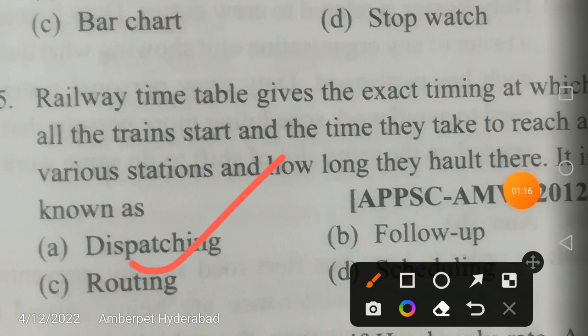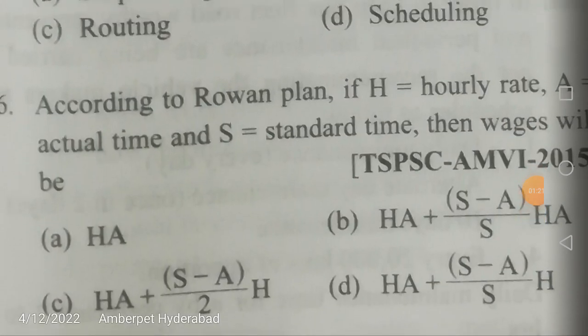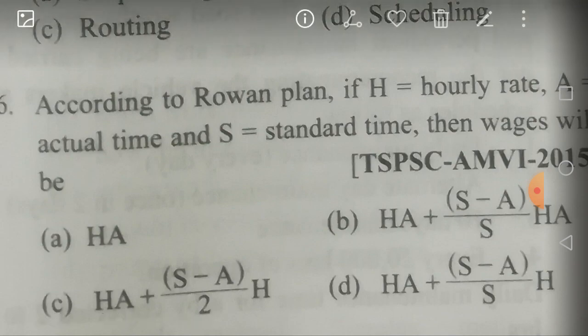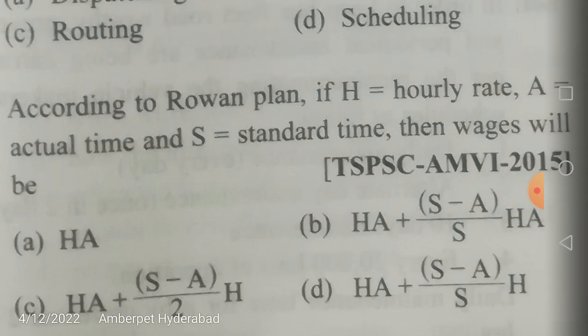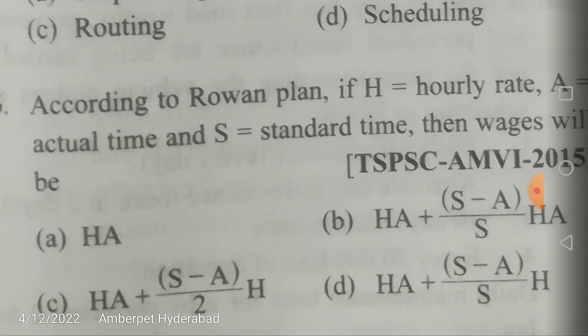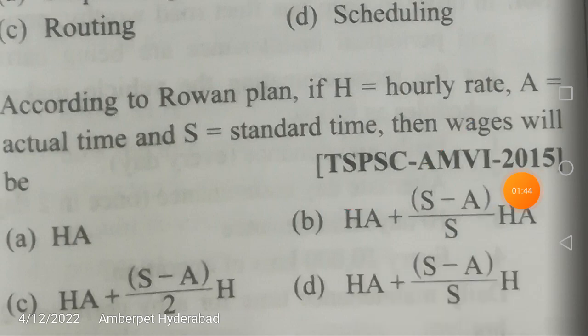This particular activity is known as routing. According to research, there are various wage incentive plans — Rowan plan, Halsey plan, etc. One question will definitely be asked from the plans, so please memorize the formulas. According to the Rowan plan: H is hourly rate, A is actual time, S is standard time, and wages = H×A + ((S−A)/S) × H×A.